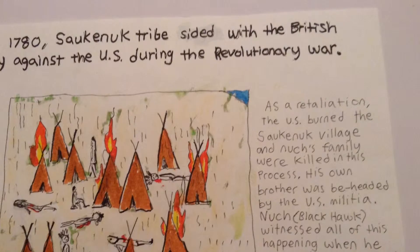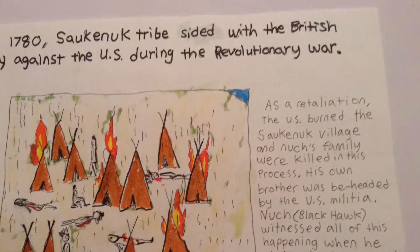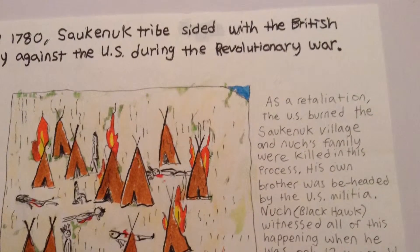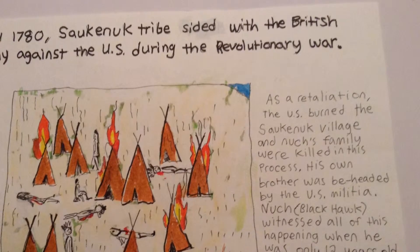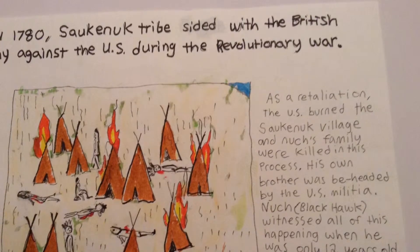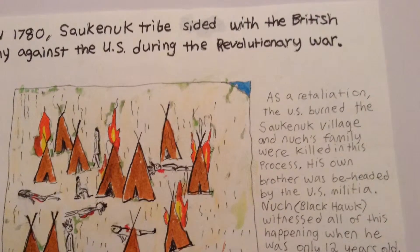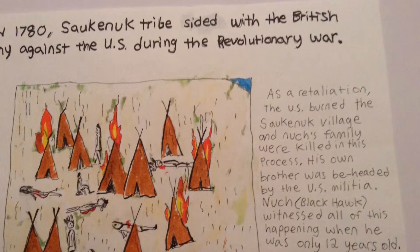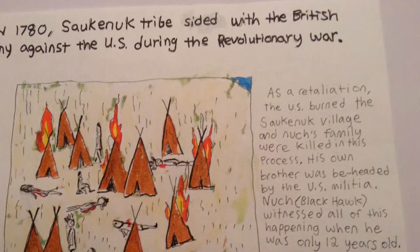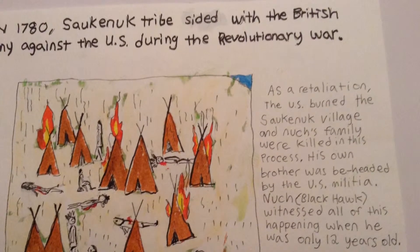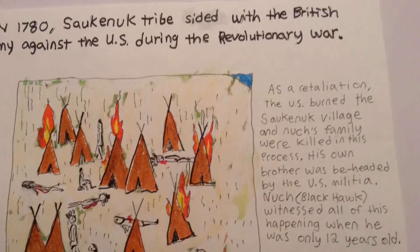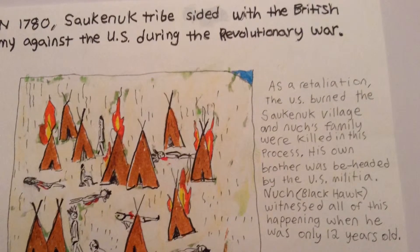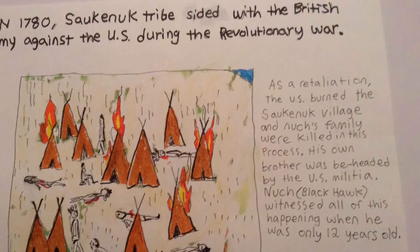In 1780, the Sauconook tribe sided with the British Army against the US during the Revolutionary War. As a retaliation, the US burned the Sauconook village and Nutch's family were killed in this process. His own brother was beheaded by the US militia. Nutch, or Black Hawk, witnessed all of this happening when he was only 12 years old.